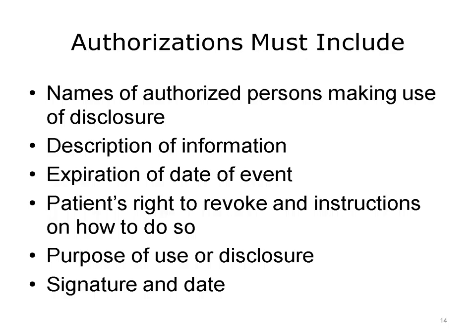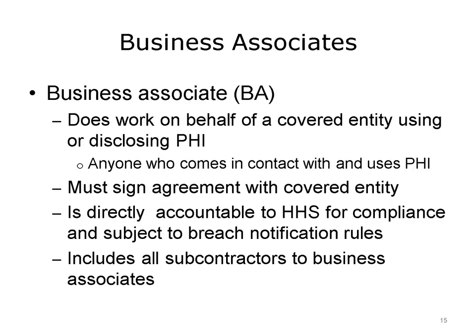HIPAA defines business associates and sets rules for their interactions with covered entities. A business associate is "a person or entity that performs certain functions or activities that involve the use or disclosure of protected health information on behalf of or in providing services to a covered entity." Business associates are directly accountable to HHS for compliance and are subject to breach notification rules. Covered entities must have signed agreements with all of their business associates. Examples of a provider's business associates include billing companies, vendors, software vendors, personal health record vendors, health information exchange organizations, e-prescribing gateways, and other persons or entities that provide data transmission services with respect to PHI to a covered entity and that require access on a routine basis to such PHI.